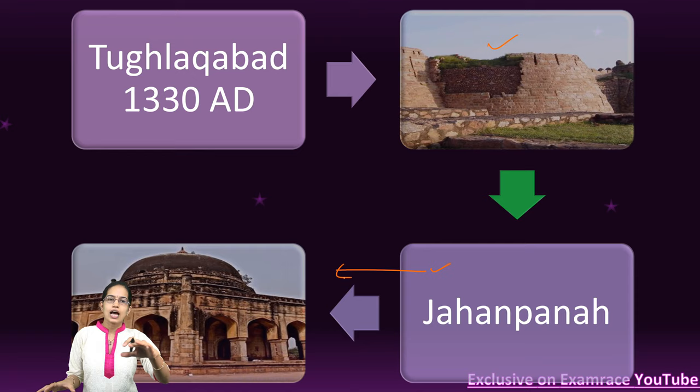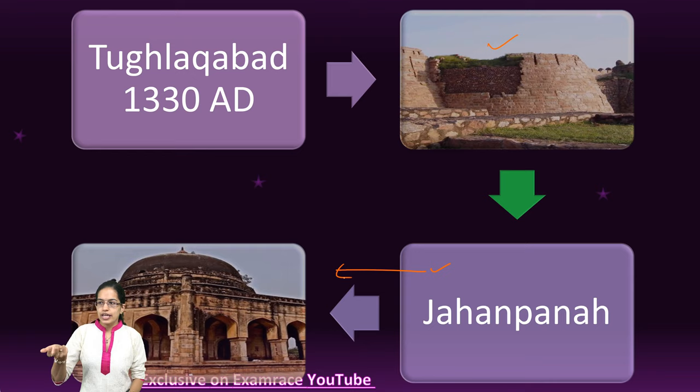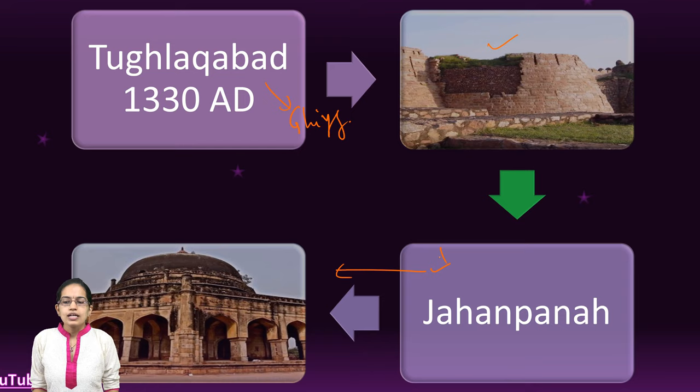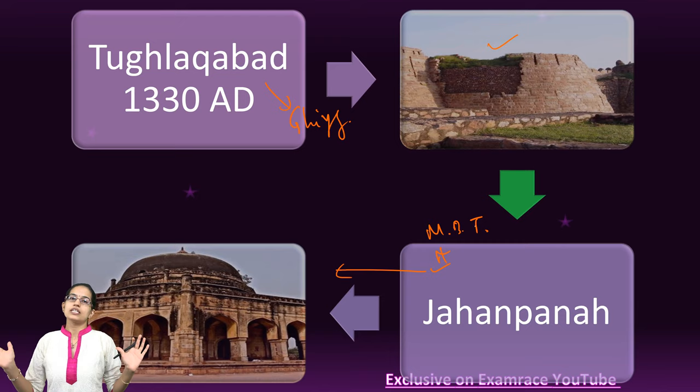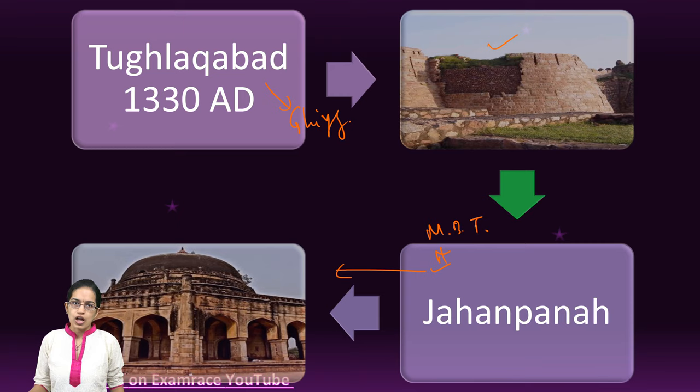Tughlaqabad was established by Giyasuddin Tughlaq, and Jahanpana was established by Muhammad bin Tughlaq during the first half of the 14th century. Jahanpana was a well-defined enclosure between Siri and the region of Lalkot, which had been extended as Kilarai Pithora under Prithviraj Chauhan.